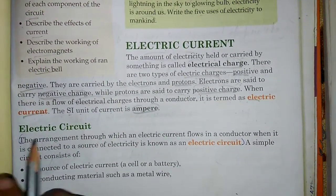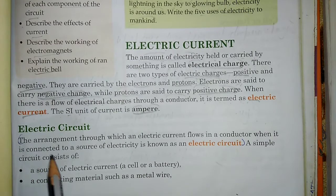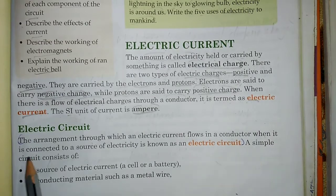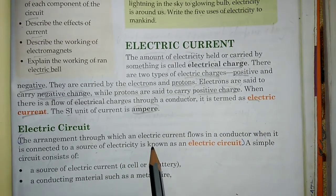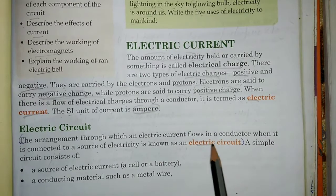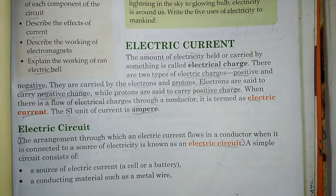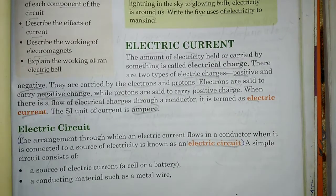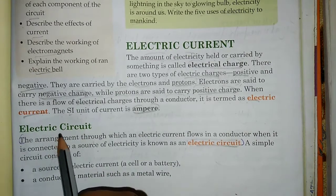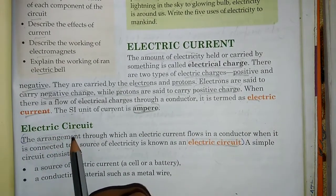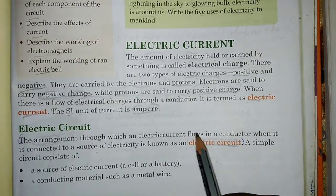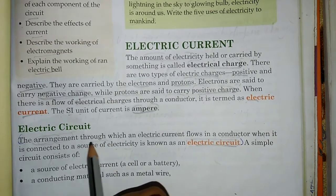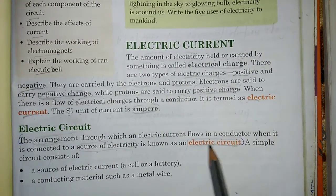Next topic: Electric Circuit. The arrangement through which an electric current flows in a conductor, when it is connected to a source of electricity, is known as the electric circuit. Electric circuit means the arrangement by which electric current flows in the conductor when connected to a source of electricity.